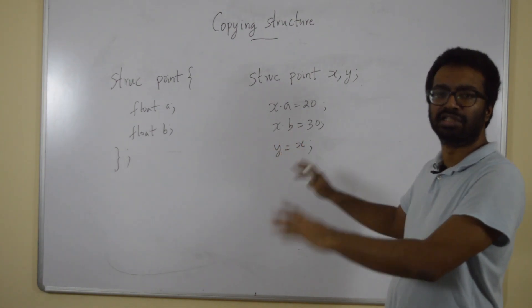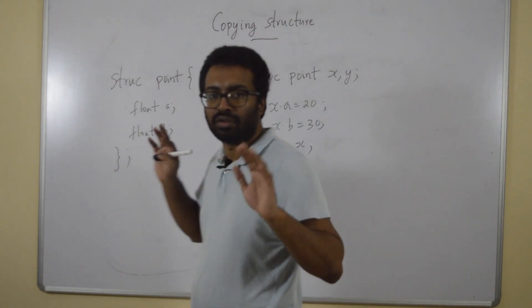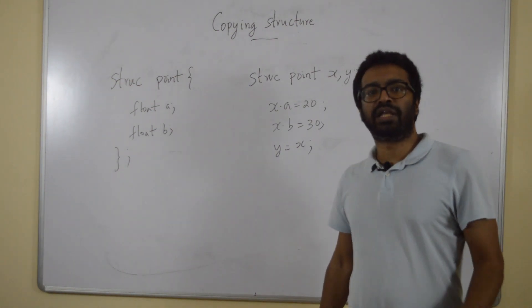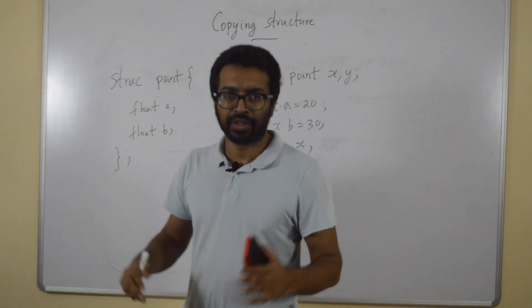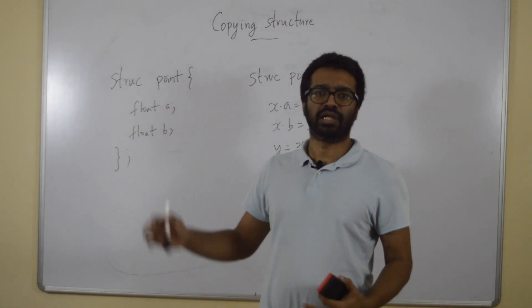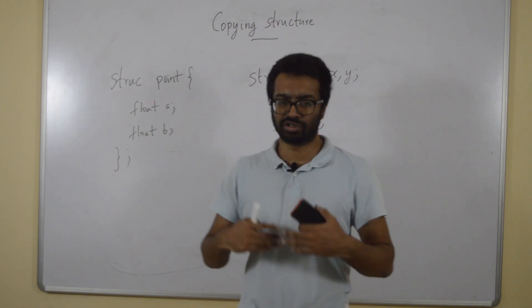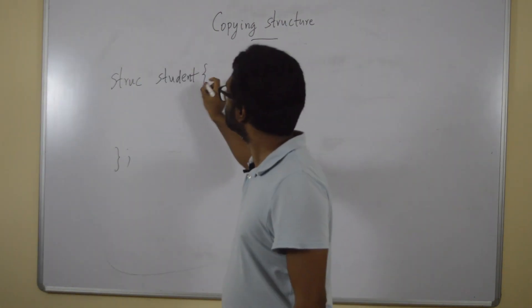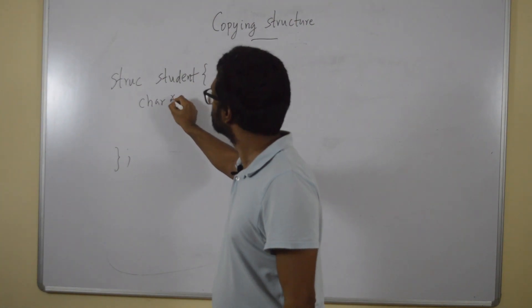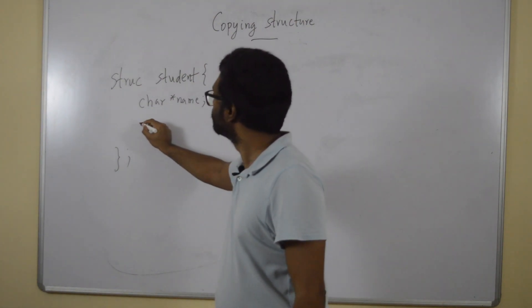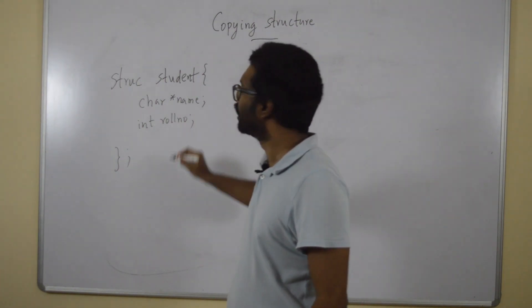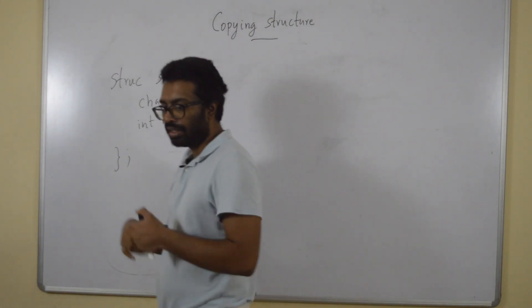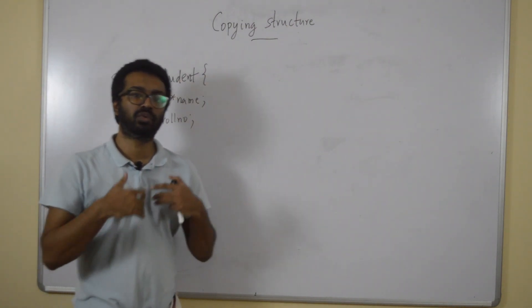For the previous example, this is going to work fine — there is no problem. But let's look at a different example. Consider a student data type — a structure called student. It will have two things: a name and a role number. The name is a character star — a pointer to a character — and an integer role number.